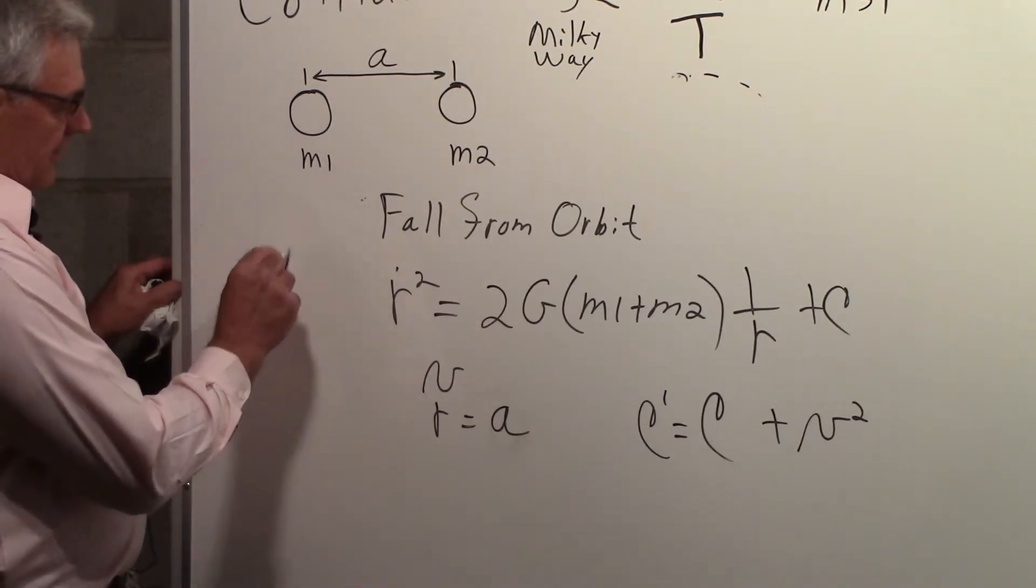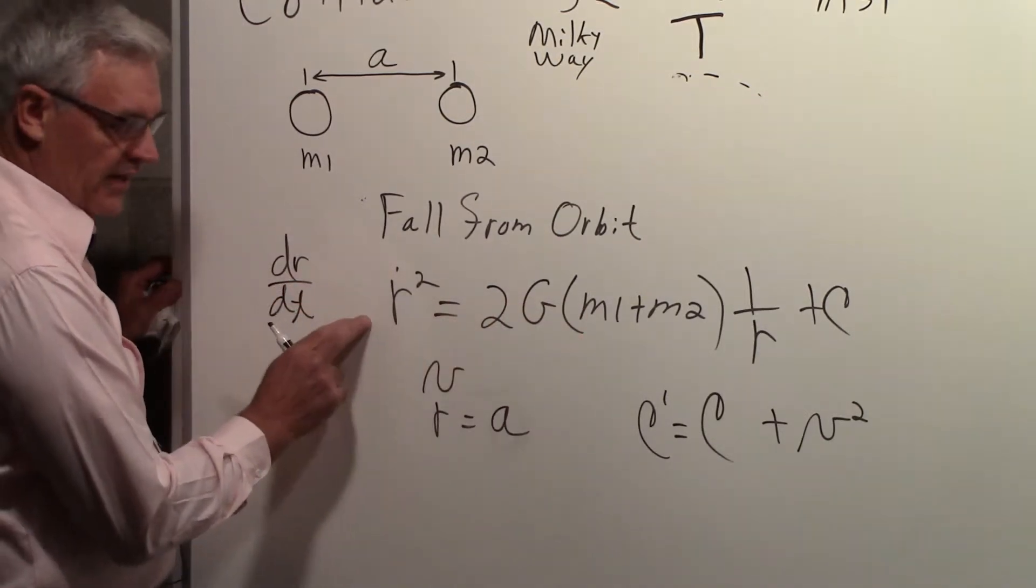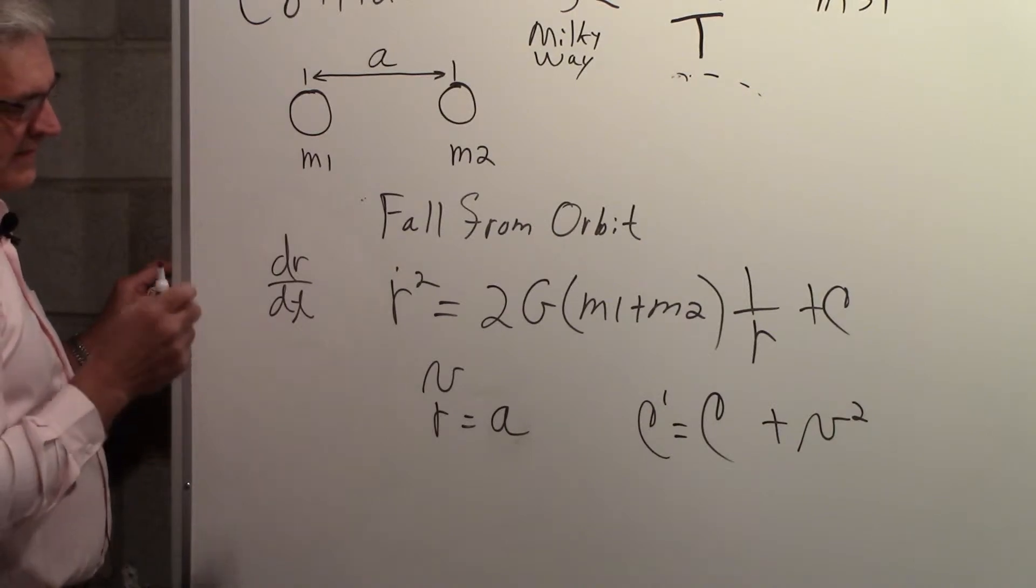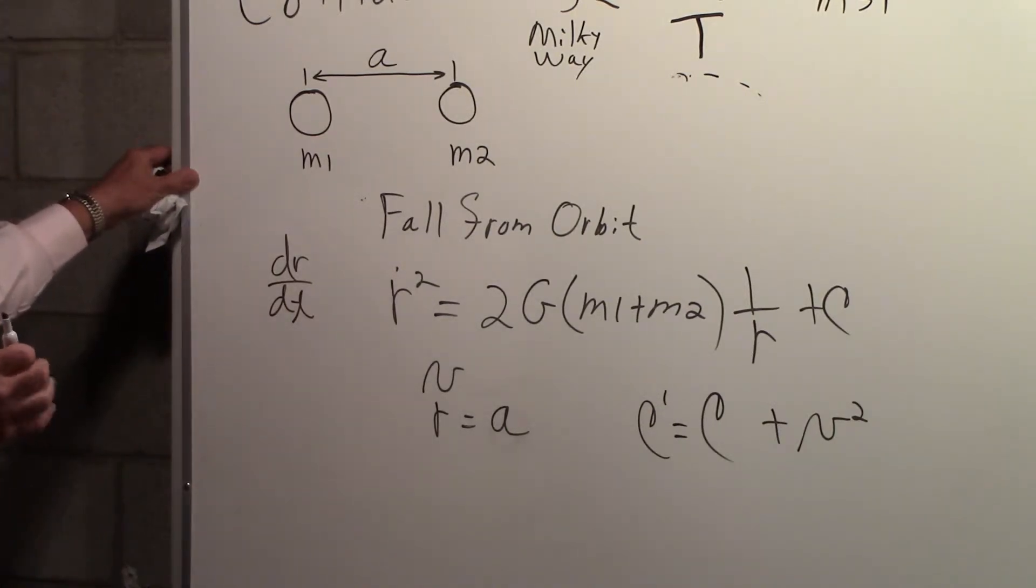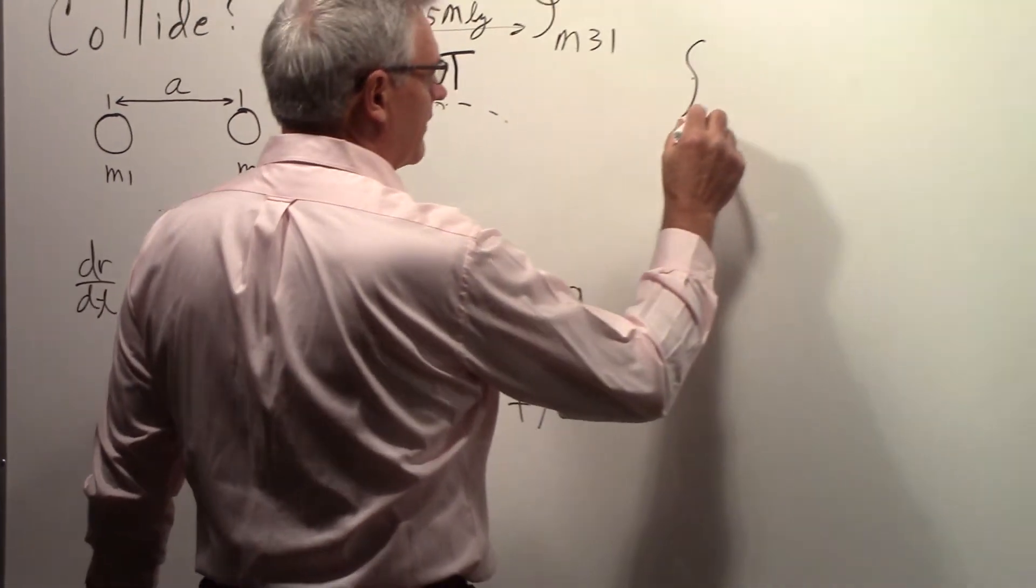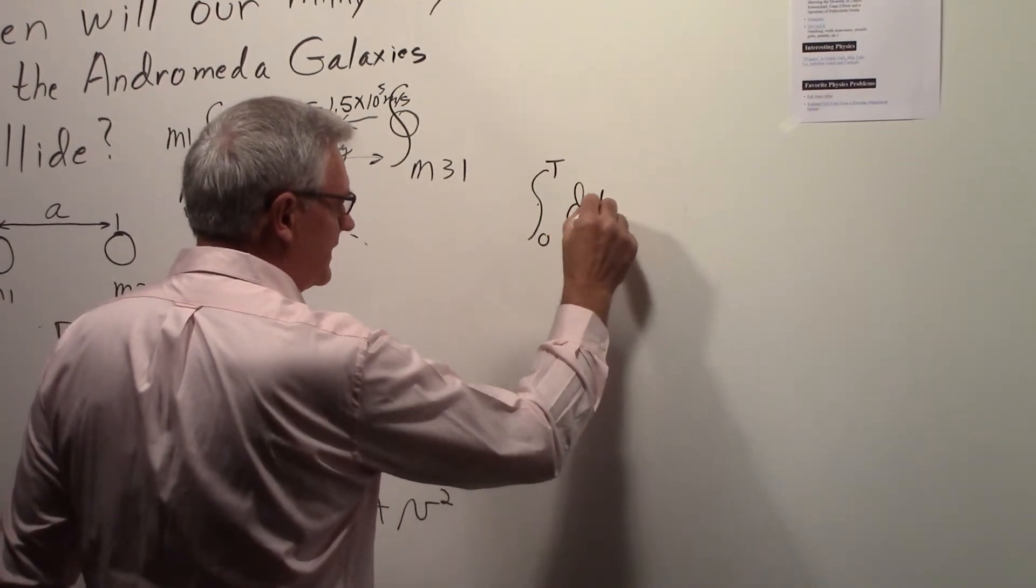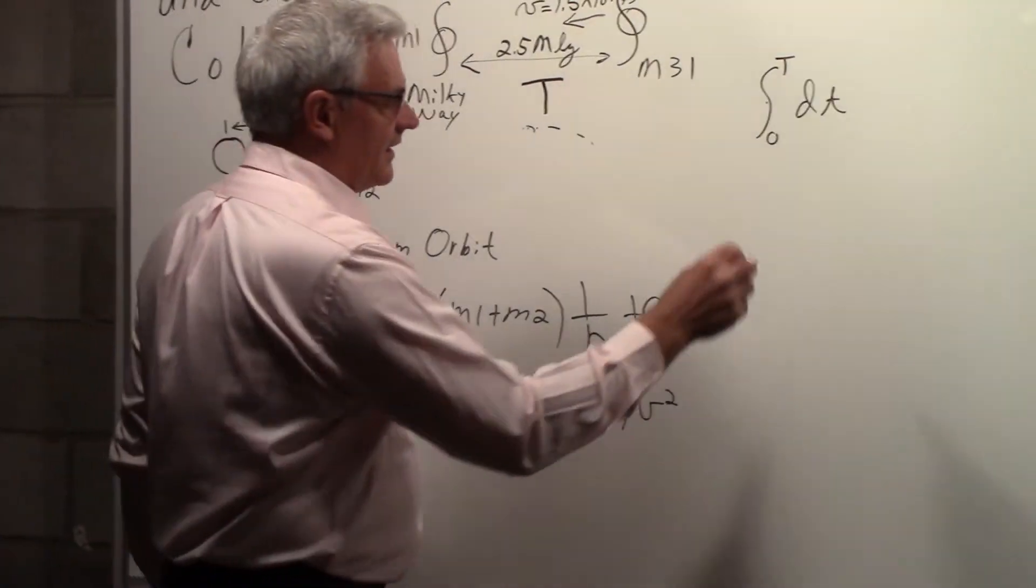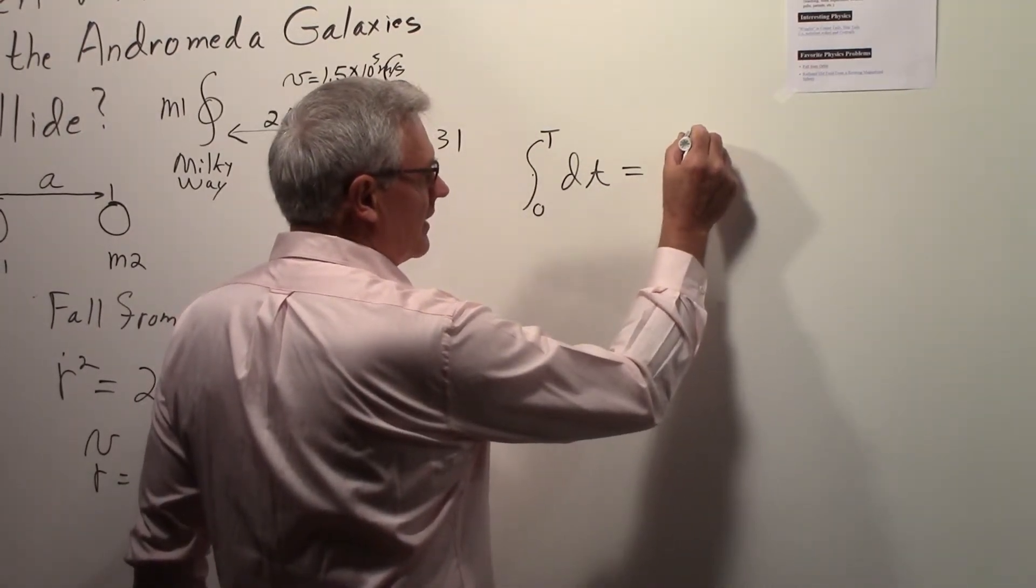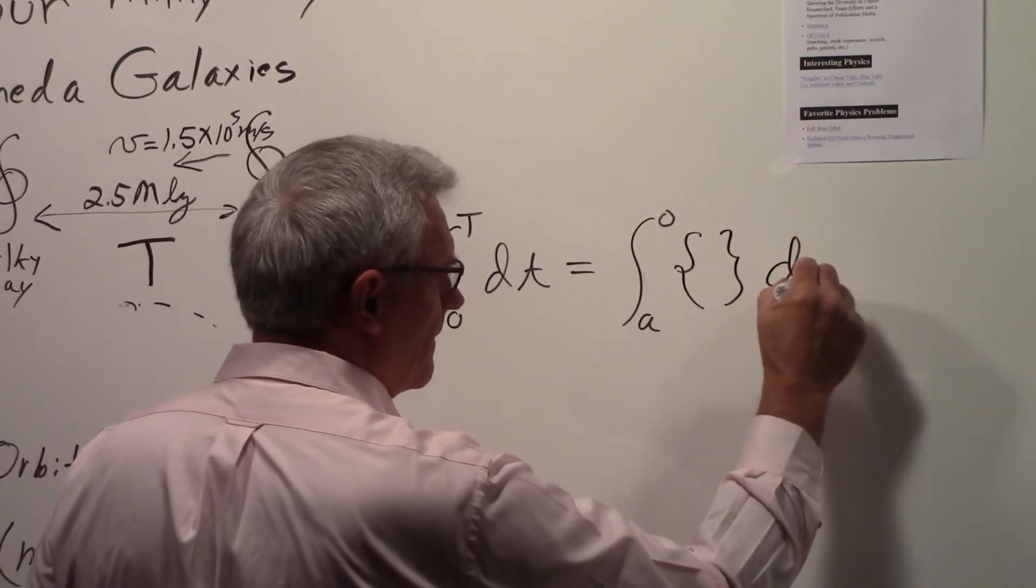You have to do the integration with that constant. The R dot is really a dr dt. So you wind up taking the square root to just get the R dot. You have dr dt is equal to the square root of all that. We're going to integrate from time equals zero to the time of collision capital T. So we take the dr to one side, dt to the other, and then we'll have an integral that we're going to do. We're starting at the distance A, we're going to go to a collision, so the distance between them will be zero at the collision.